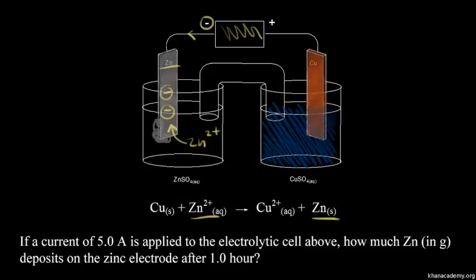At our other electrode, the battery pulls electrons away from copper, and solid copper is oxidized. So we lose two electrons to form Cu two-plus. The copper electrode loses mass over time. When we look at our problem, this is a quantitative electrolysis problem because they're telling us what the current is, 5.0 amps. So we're applying a current of 5.0 amps. How much zinc in grams deposits on the zinc electrode after one hour? We have to figure out how much zinc forms on our zinc electrode.